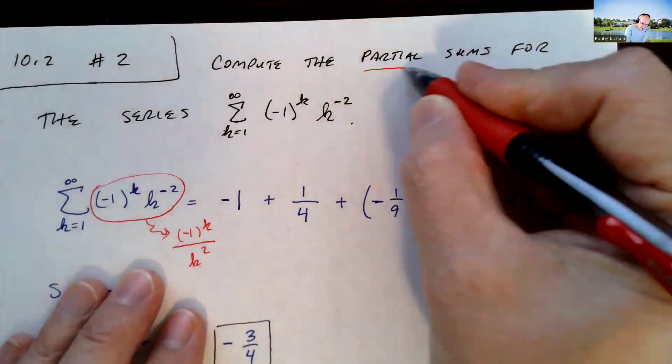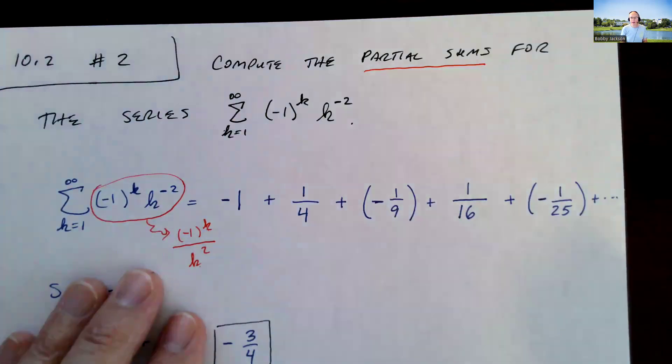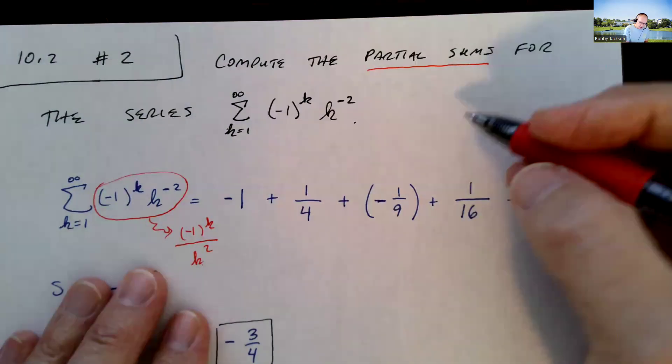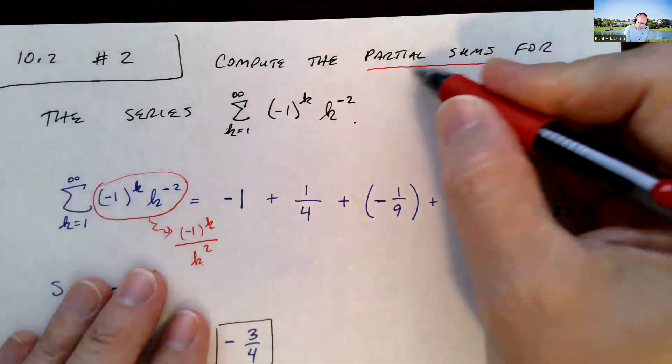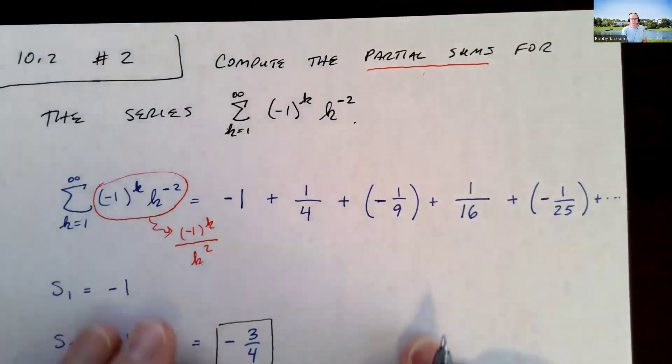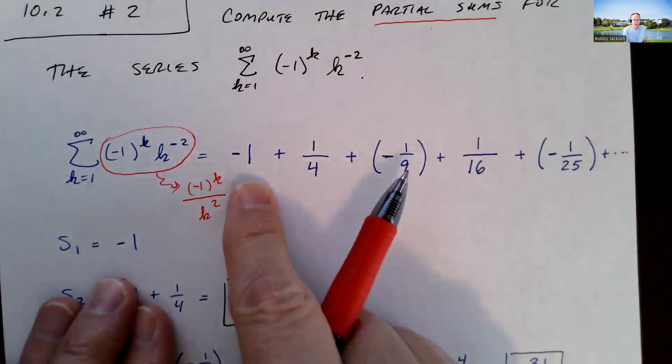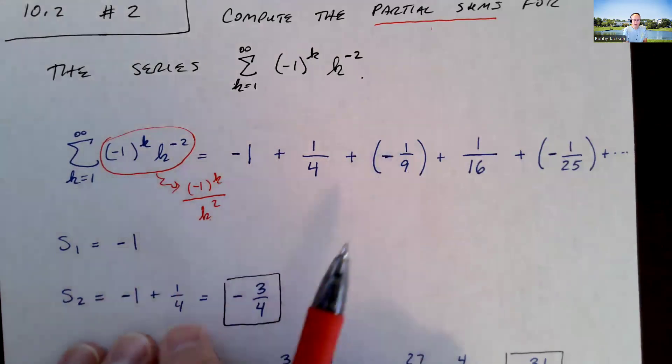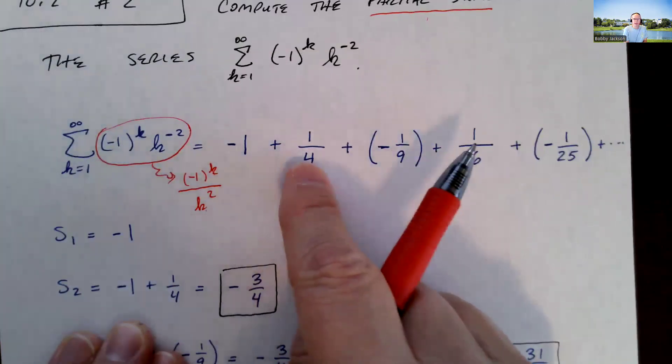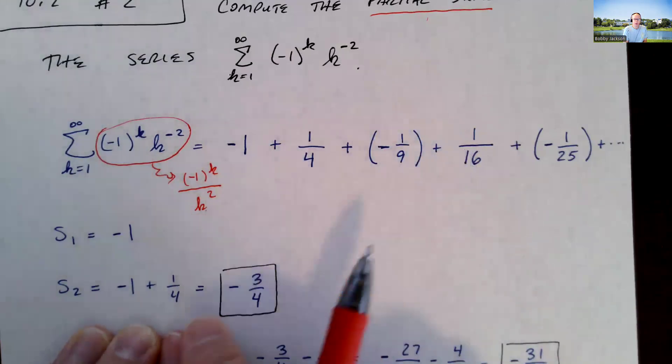Now the partial sums are the s sub n's, or I guess s sub k's. These are the partial sums. s sub 1 will be equal to a sub 1. s sub 2 will be a sub 1 plus a sub 2. So I'm going to add these two together. There's s sub 2.